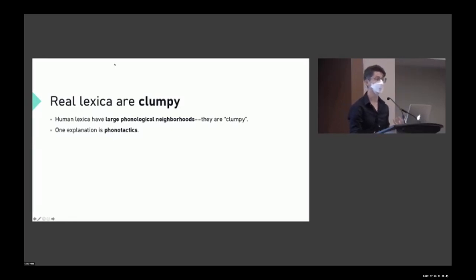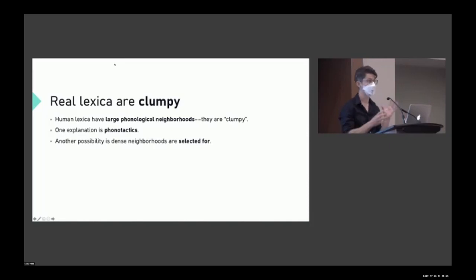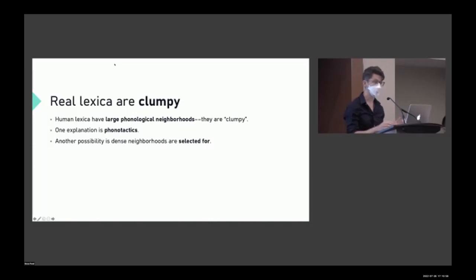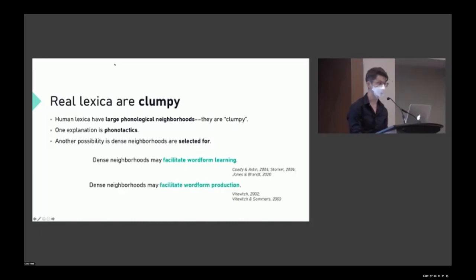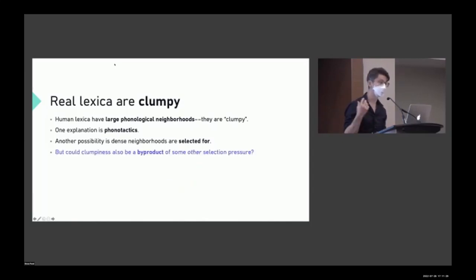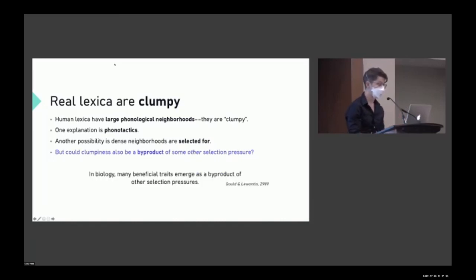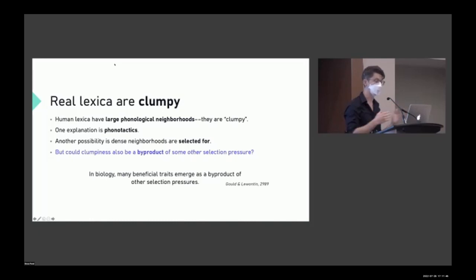That suggests phonotactics can't tell the whole story — there has to be something else we need to posit. Compared to phonotactic baselines, we observe more neighborhoods in real lexica, suggesting they may be positively selected for. There is psycholinguistic evidence that dense neighborhoods facilitate word form learning as well as word form production. But we're interested in whether this clumpiness could also be a byproduct of some other selection pressure not accounted for in previous baseline models — just as in biology, many beneficial traits emerge as byproducts of other selection pressures.